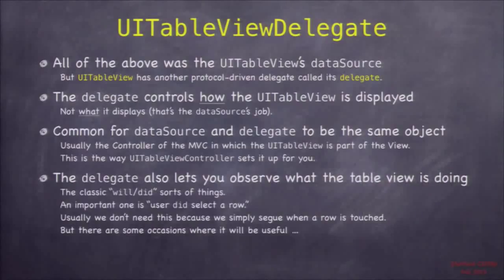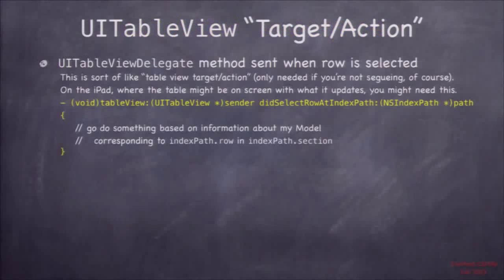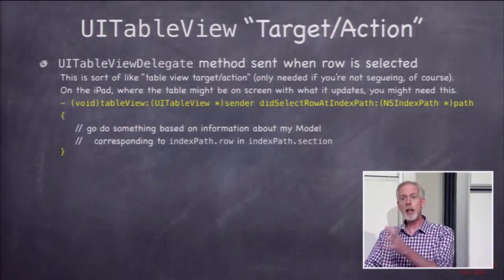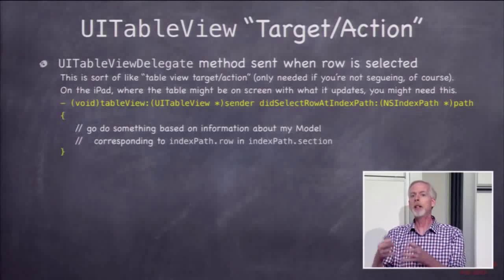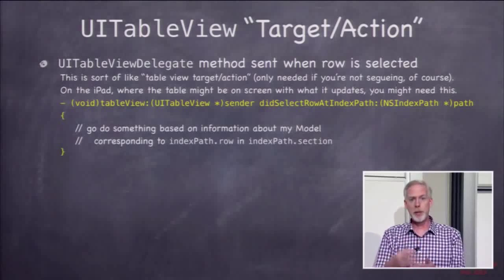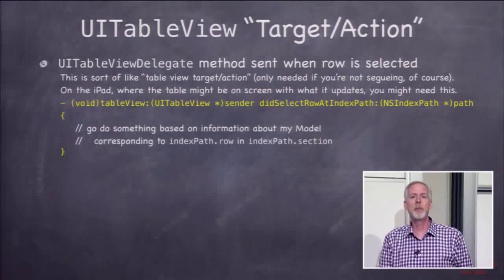The delegate lets you observe what's going on in the table. One especially interesting method is didSelectRow — the delegate protocol can tell you when the user tapped on a row. When the user taps on a row we're often going to segue, but it's also possible to implement tableView:didSelectRowAtIndexPath in the UITableViewDelegate protocol. On iPad, when you touch on a table, the thing you're updating may already be on screen so you don't segue to it — you just update it. In today's demo we'll have an image where clicking a table row shows an image that's already on screen.